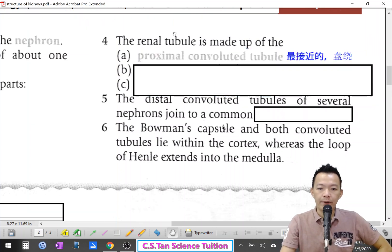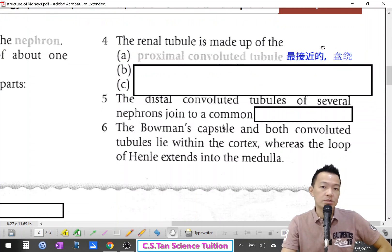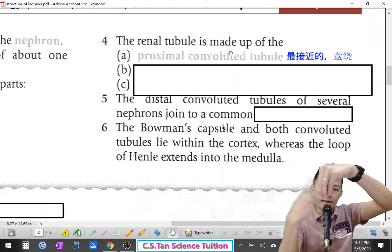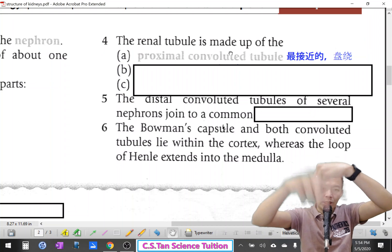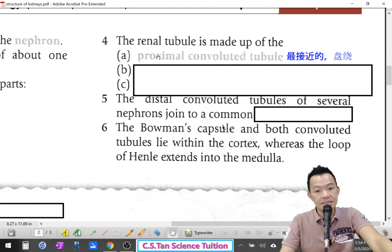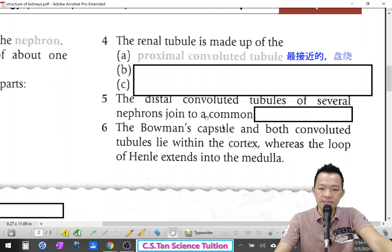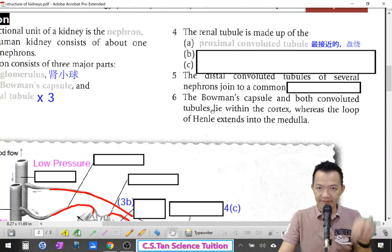Number one: proximal convoluted tubules. Proximal means the closest, the front. Convoluted means winding, coiling around — so the 'front winding tube.' Let me show you a diagram first so you won't be so worried.